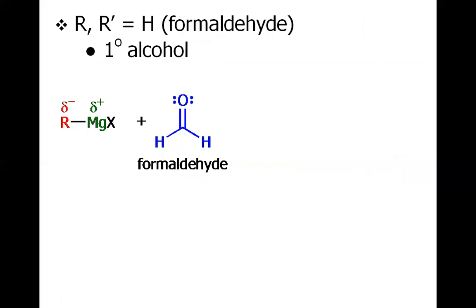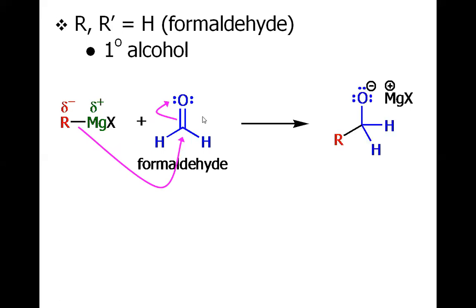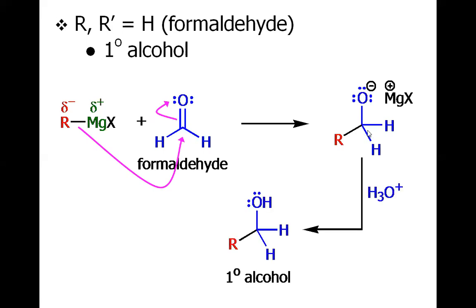Let us discuss the mechanism. If we have formaldehyde — meaning hydrogen on both sides of the carbonyl — we will have a primary alcohol generated. The R⁻ ion attacks the carbonyl carbon, giving an oxyanion tetrahedral intermediate, which is quenched by acidic workup to afford the primary alcohol. The red R has come from the Grignard reagent source and the two hydrogens belong to the formaldehyde, so overall we have the primary alcohol.